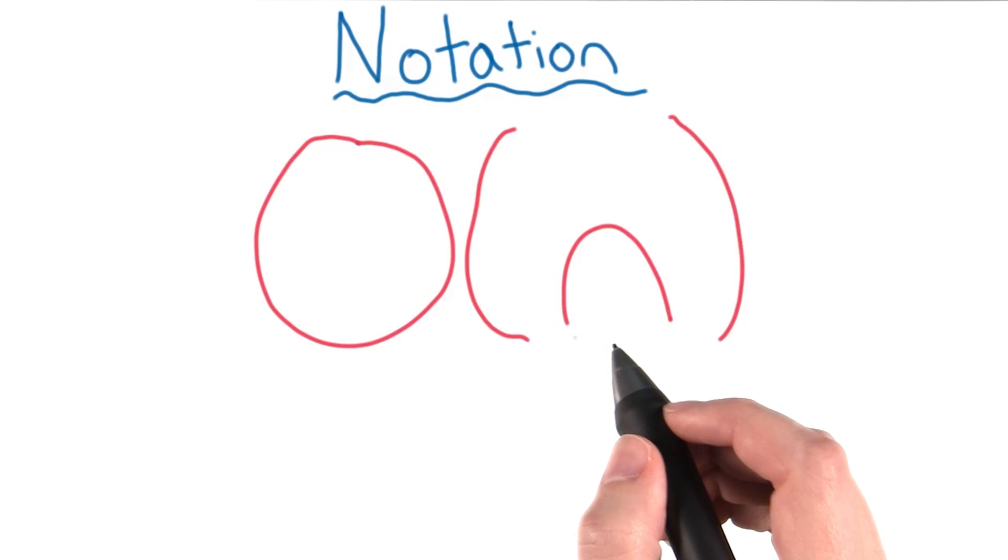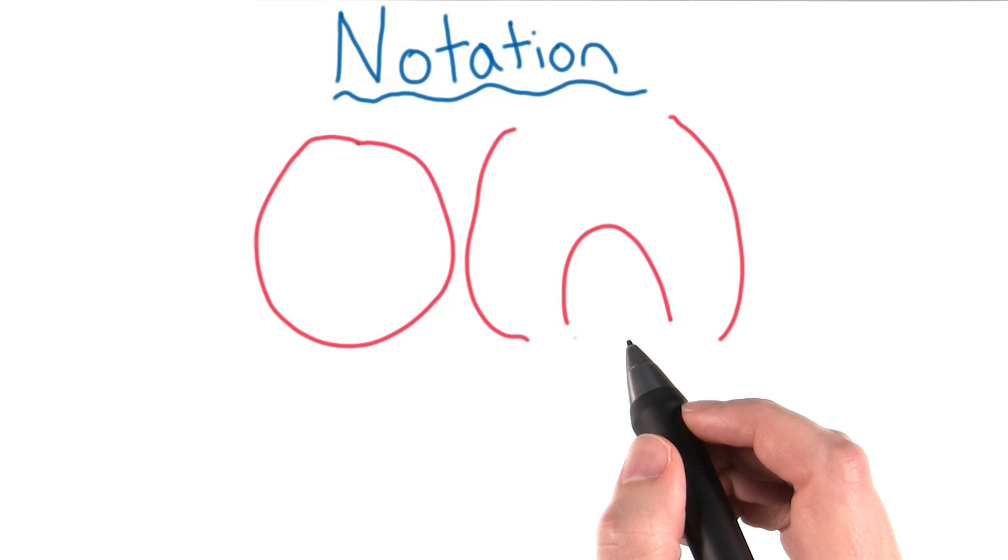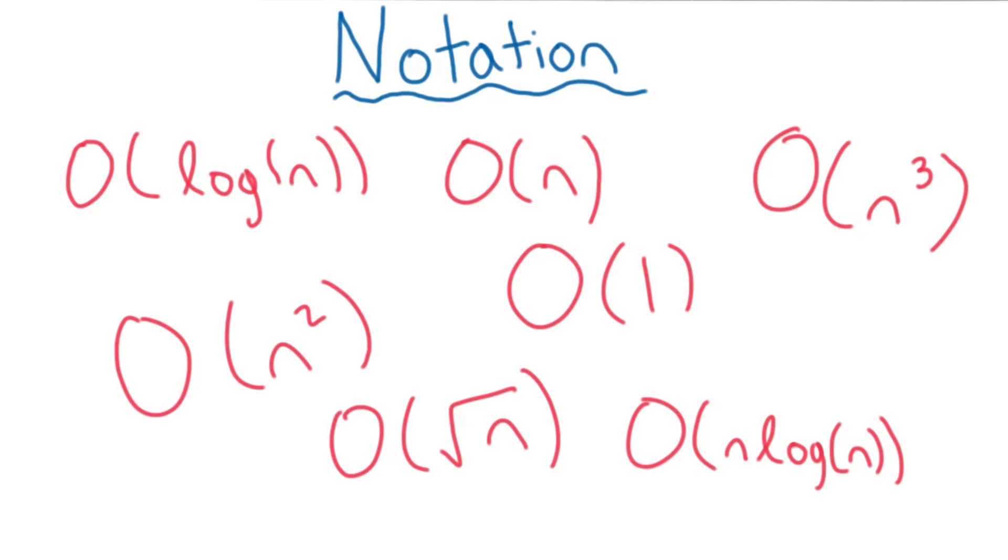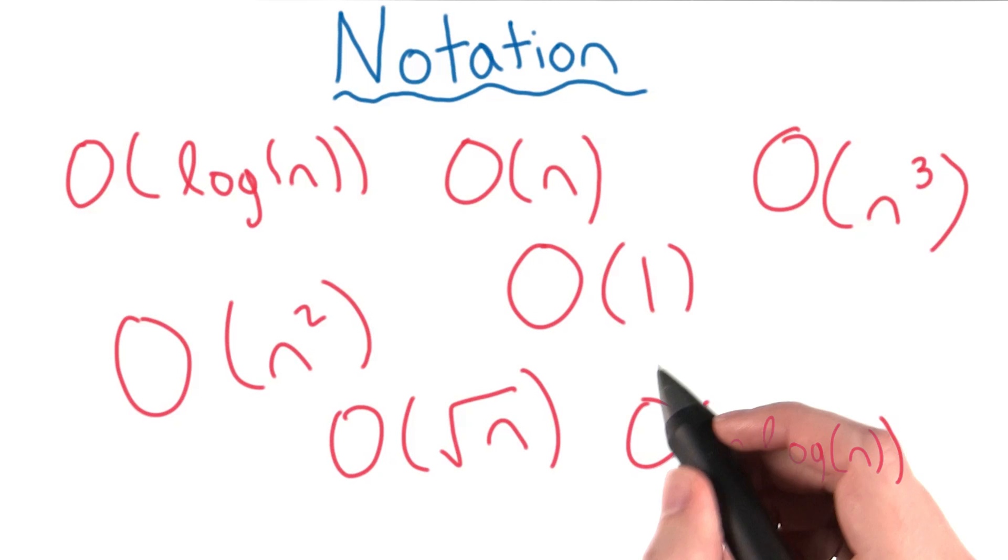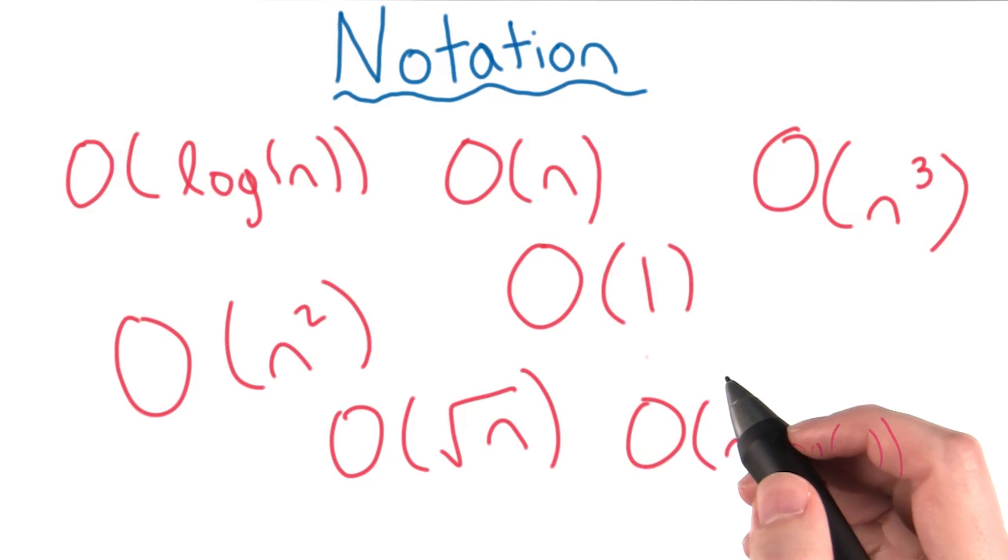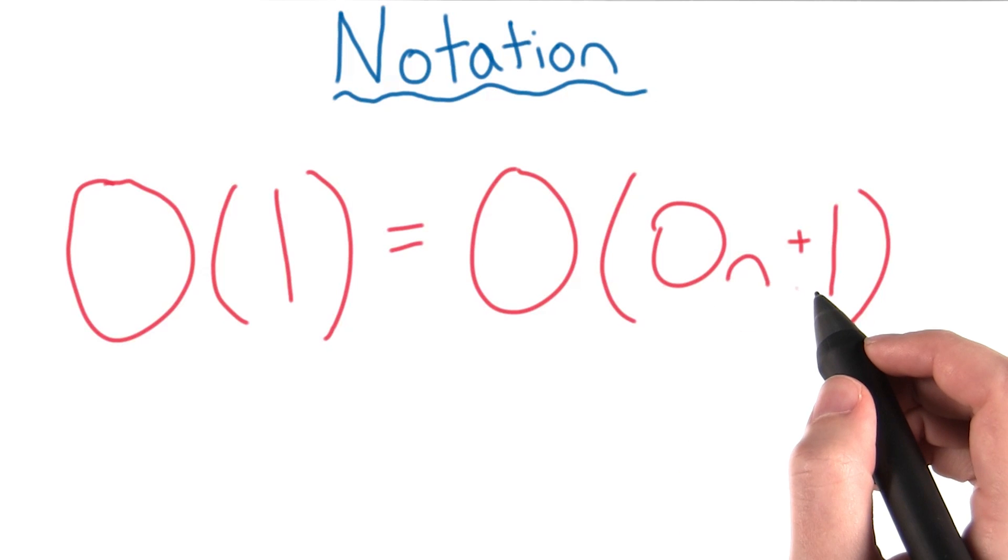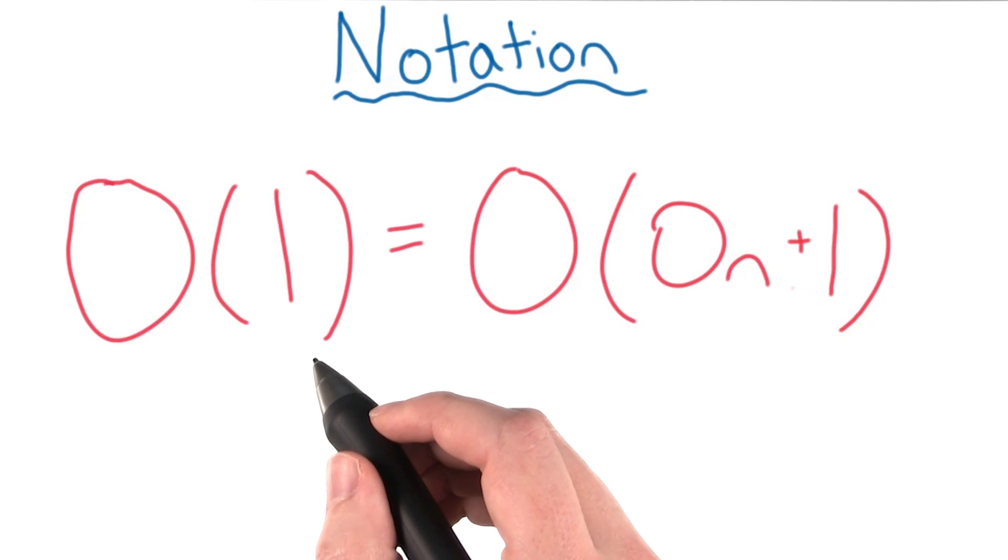The algebraic expression is always going to be a mathematical function of the variable n, such as some of these examples. As you can see, these all contain algebraic expressions with the letter n. The only exception is this guy right here. Yes, the number one still counts. It's just another way to write 0n plus 1. So this is a value we can still use.